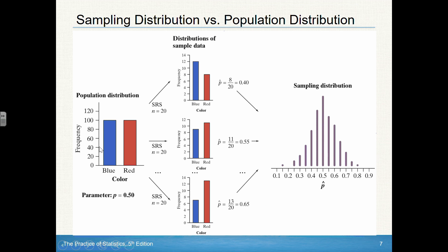Let's say the population distribution looks like this, where half of the outcomes are red and half of them are blue. If we were to take multiple samples, like this first one at the top, we see it's not 50-50 — there's sampling variability. The p-hat, which is the proportion of red, is only 40% when the expected p was 50%. In the second SRS, same size 20, we get a p-hat of 0.55. And in the third SRS, we get 65% of them were red.